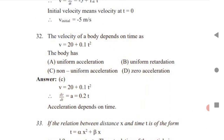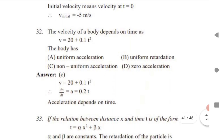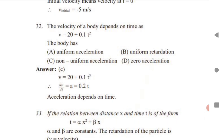Next: the velocity of a body depends on time. This is a tricky question. When you calculate the acceleration from the given velocity expression, the acceleration also depends on time. Since both velocity and acceleration depend on time, the body has non-uniform acceleration. That is the answer.